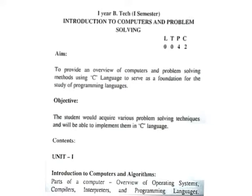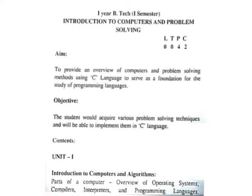Every course has five units. Here we have unit one — Introduction to Computers and Algorithms — then unit two, unit three, and so on. Unit four's title is Functions and unit five is Structures. This five-unit structure is followed throughout the university across all 45 programs. Each unit has a title and specifies the topics under it.